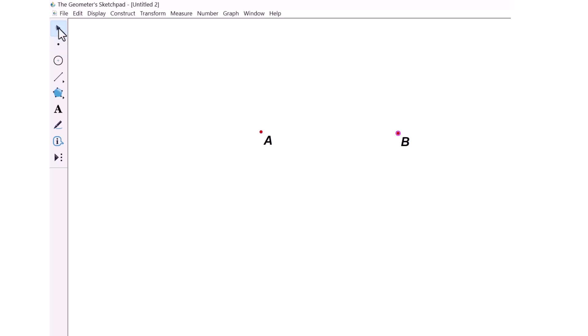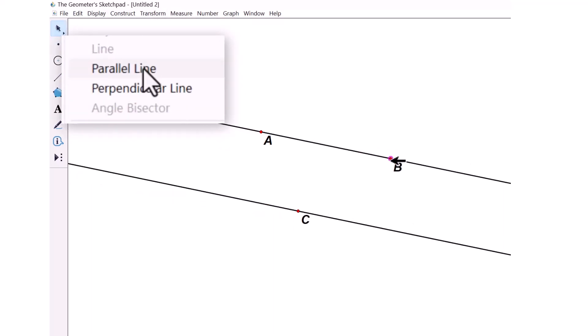Hi, guys. In the last video, we talked about different angle pairs that are formed when you have two parallel lines and a transversal. And it was just a vocab video. By the end of this video, you have to know how those angle pairs are related to each other.